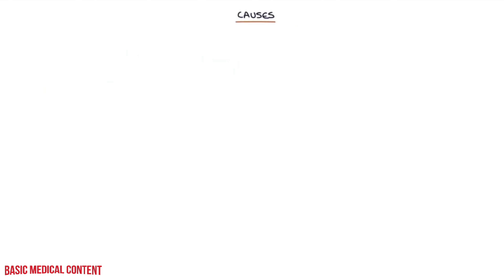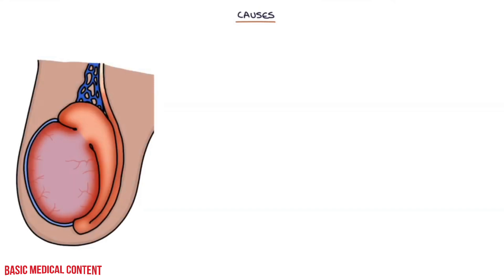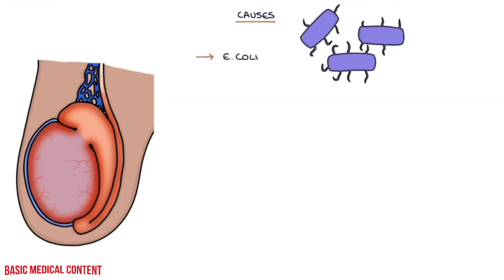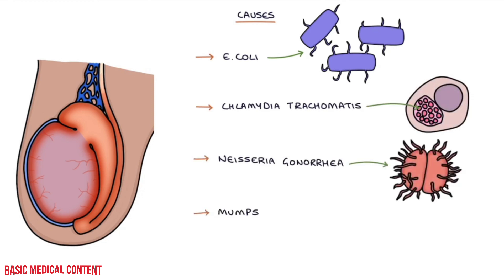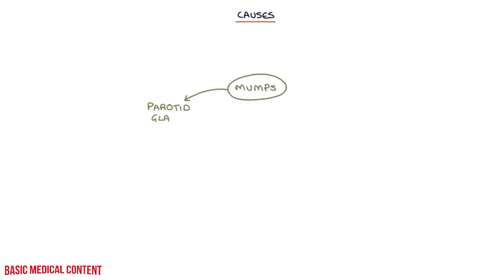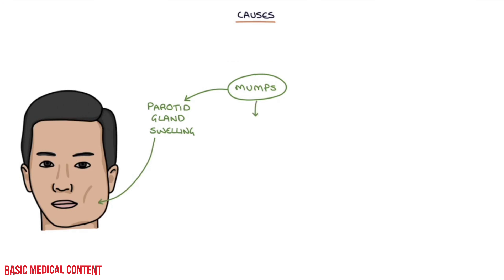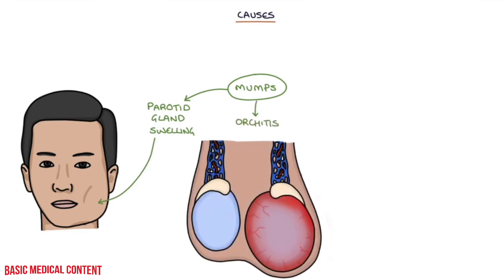Let's talk about the causes of epididymo-orchitis. The key causative pathogens are E. coli, Chlamydia trachomatis, Neisseria gonorrhea, and mumps. Think of mumps in patients with parotid gland swelling and orchitis. Mumps tends only to affect the testicle, sparing the epididymis. Mumps can also cause pancreatitis.